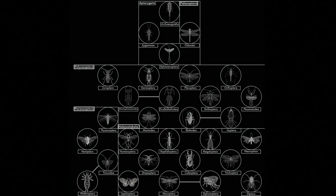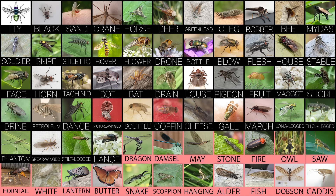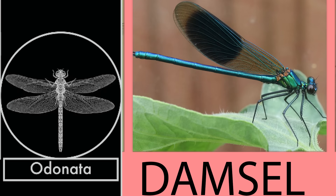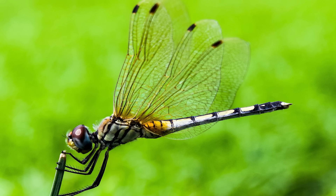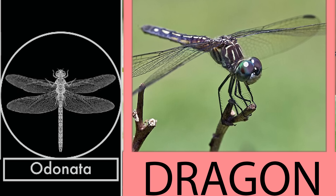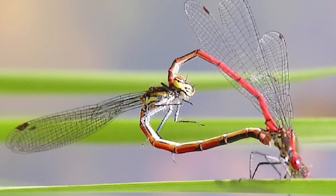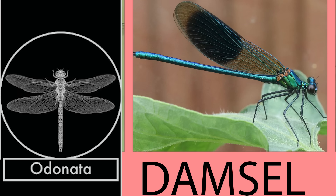First are the Odonata: the dragonflies and damselflies. Dragonflies are named for how proficient they are as predators, invoking the mythic imagery of a dragon. Damselflies are related but tend to have a more slender and delicate appearance and are able to fold their wings upward over their body. Both belong to the order Odonata.